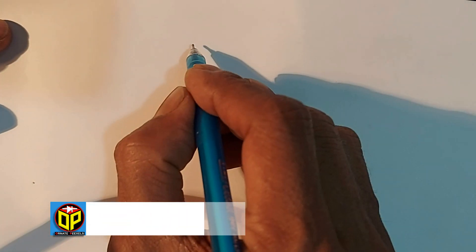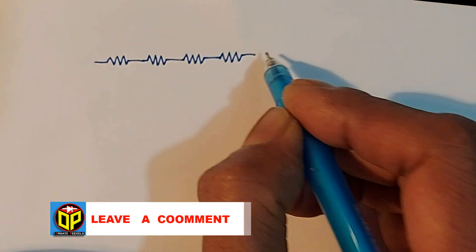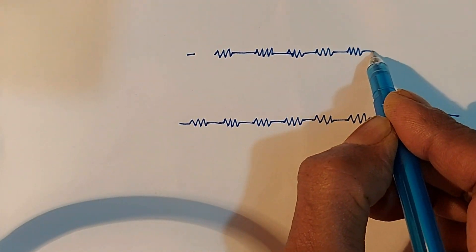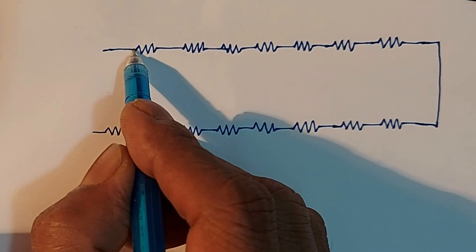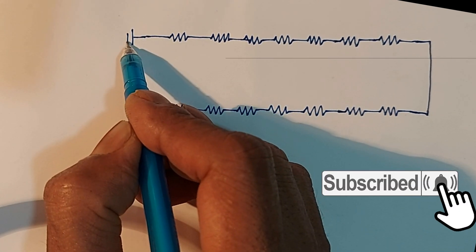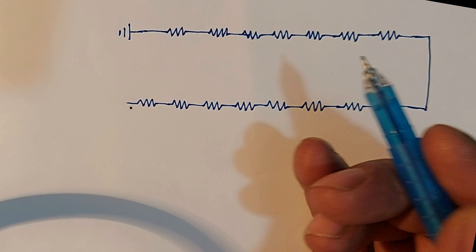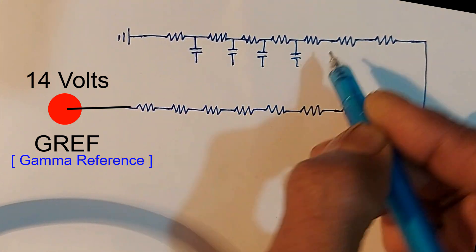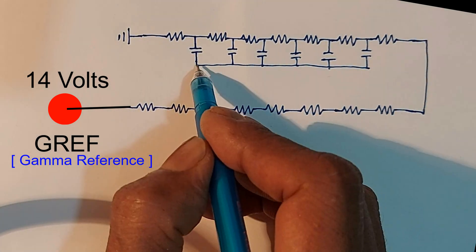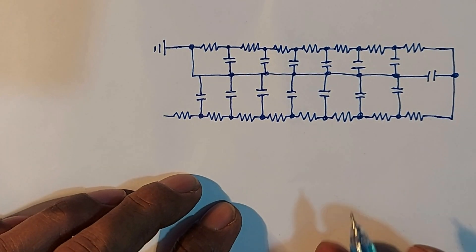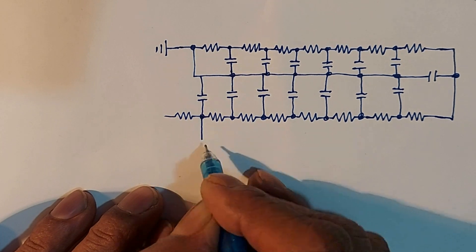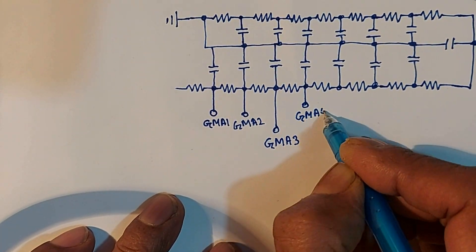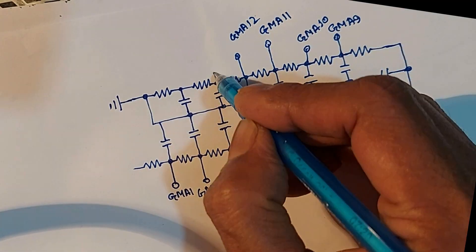Structure of gamma voltage distribution circuit. This circuit is very simple — I will explain it by drawing the circuit exactly. In this gamma circuit, there are 15 resistors connected in series. One end of the resistors is connected to ground, and the other end is connected to the GREF. From the junction of each series resistor, one filter capacitor is connected to ground. The voltage of gamma 1 comes out from here, this is gamma 1, and this is gamma 2. Thus, 14 types of voltage are distributed in the gamma circuit of the source COG.